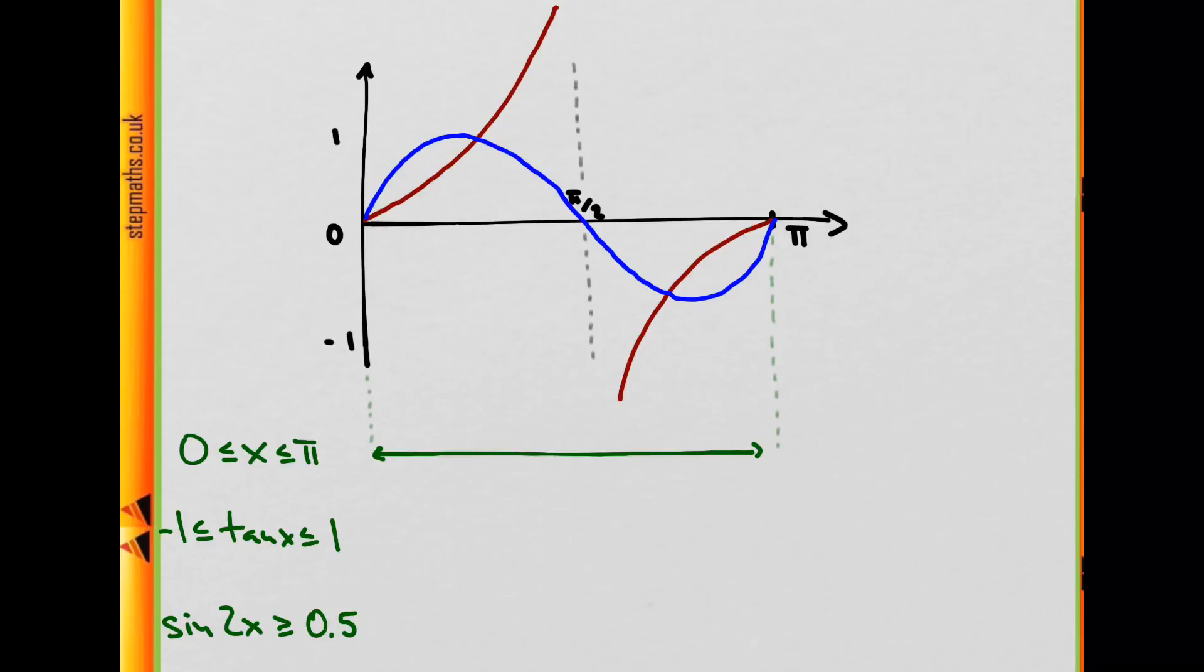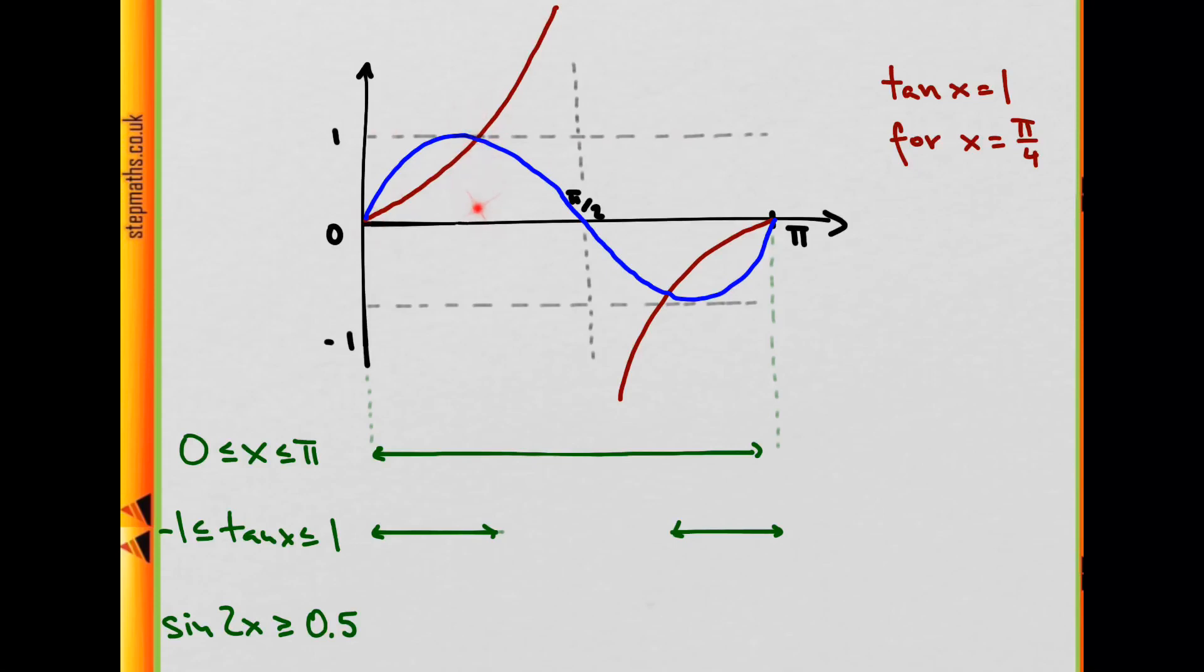And on to the second one. So tan needs to be between negative 1 and 1. Let's draw the lines of y equals 1 and y equals negative 1. And as we can see, the red graph is between the two lines for two parts of the interval from 0 to π, right here is one and the second one symmetrically at the other end. And as we know, tan of x equals 1 for x equals π by 4. So this point here, where the two lines intersect, has to be at x equals π by 4. And then by symmetry, the other point of intersection, this time with y equals negative 1, with the other constant function, has to be 3π by 4. That's just 2π minus π by 4. And so those are the two intervals for which the second condition is satisfied.